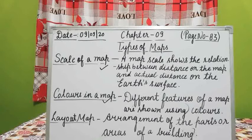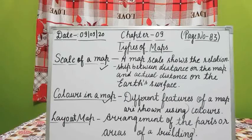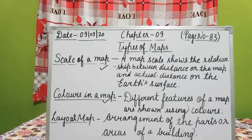Dark brown color is used to show hills and mountains, as you can see at the top of the map. Different colors on the map show different features to make us understand anything on the map very easily.